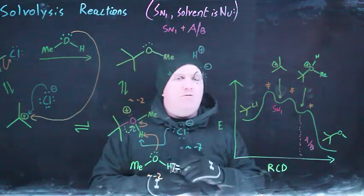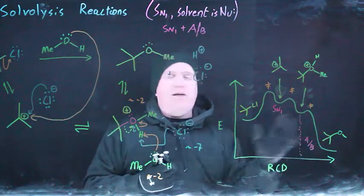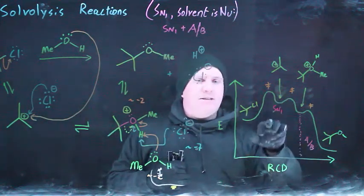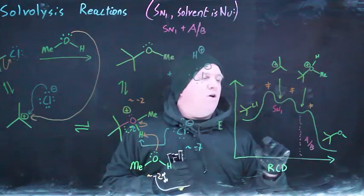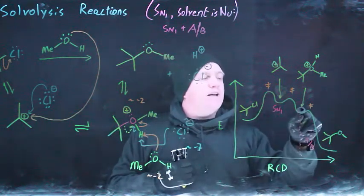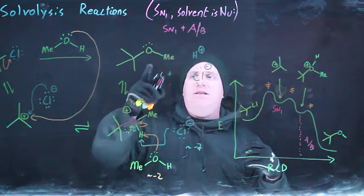So solvolysis reaction, in general, is almost always going to involve some mechanism like this. You are going to have the leaving group leave. You are going to create the carbocation intermediate that then marks this as an SN1. You're then going to proceed on to some intermediates where the solvent has attacked, but before you do the acid-base that then leads to the final product.